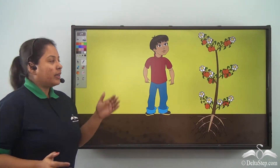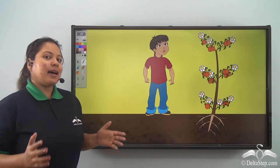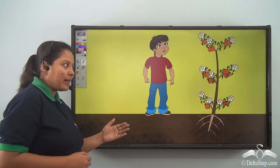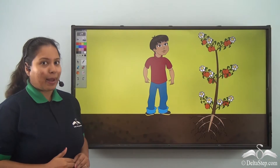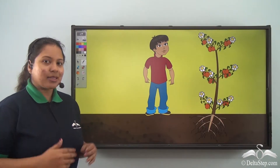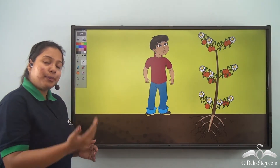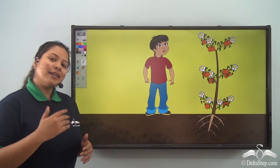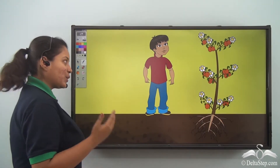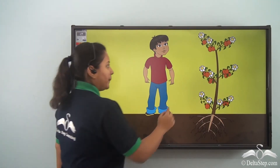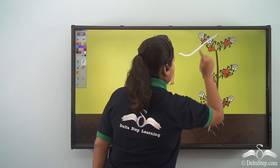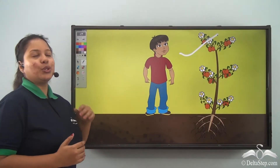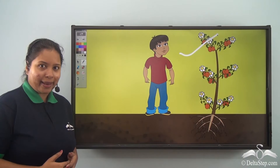Here you saw the different parts of the plant. Finally the magical plant said: "Remember me, I am your friend and I am a tree." Now you know plants are our best friends and we should know their body parts well.